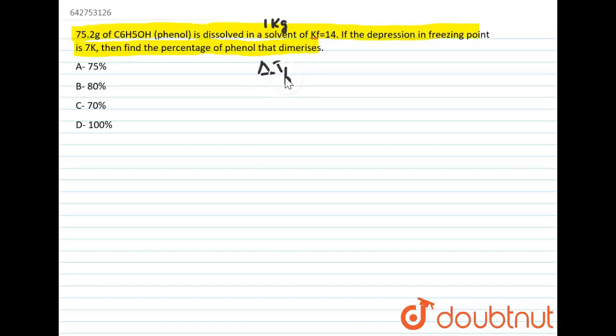We know that delta Tf, that is depression in freezing point, is equal to i Kf into m, where i is the vanthoff factor.